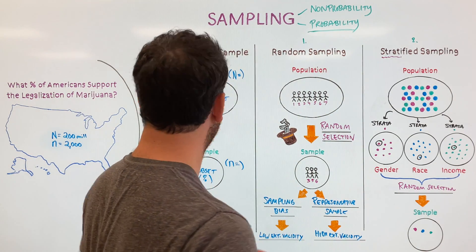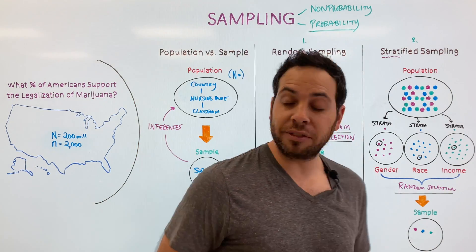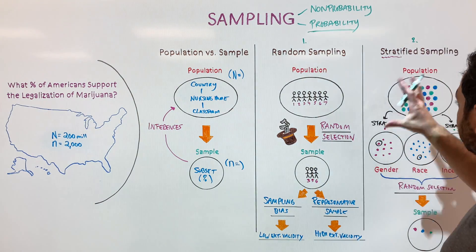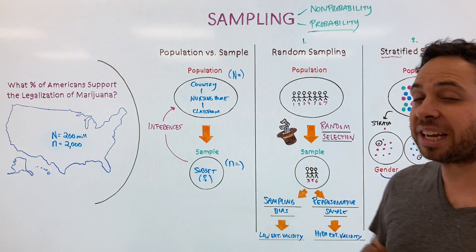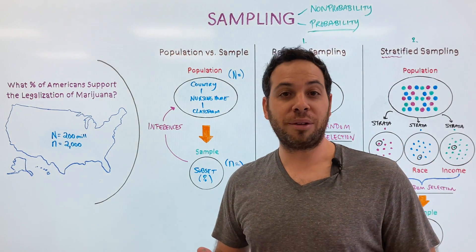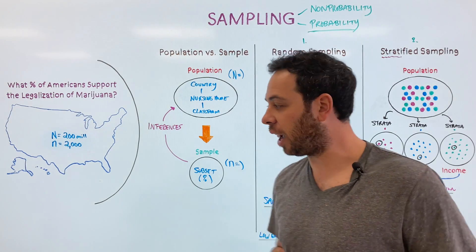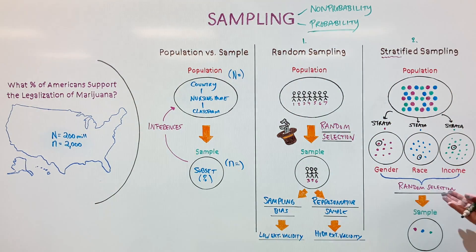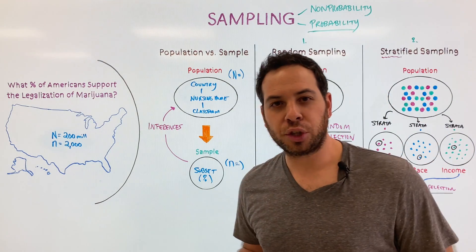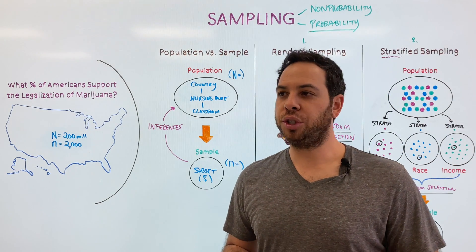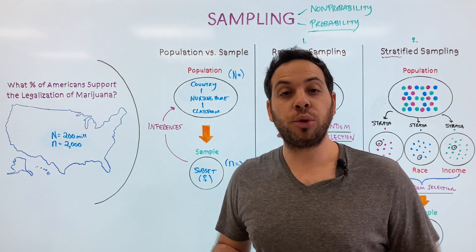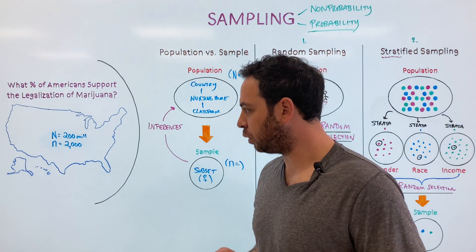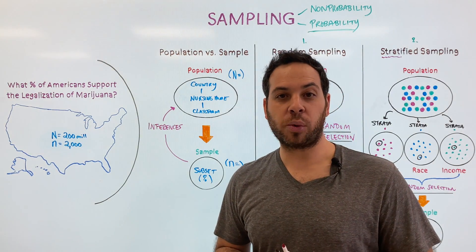How might stratified sampling apply to our question about what percentage of Americans support marijuana legalization? You'd probably use stratified sampling because of the size and diversity of America. You could divide by gender, race, income, educational background, age, and more — to make sure that everybody is accounted for. That's a nice way to answer that question.